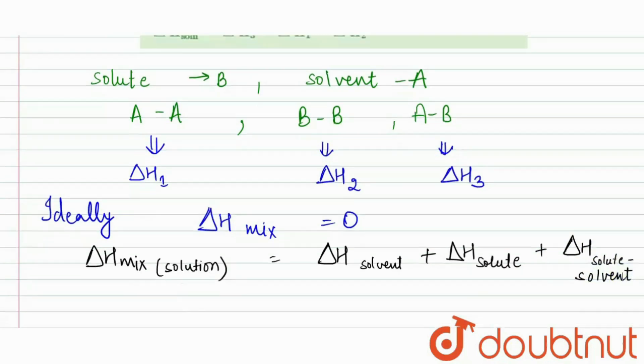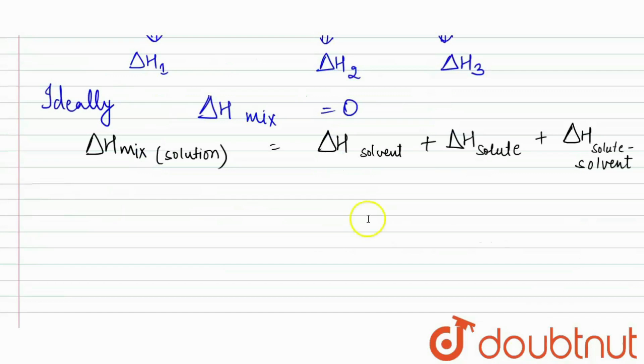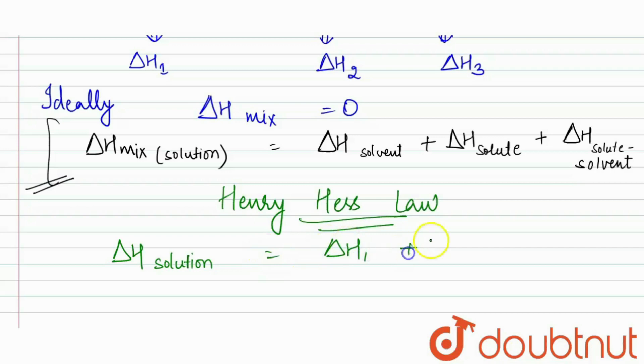Okay, so this is the condition for the ideal solution, or it is also termed as the Henry Hess law. So here it will be delta H solution equals delta H1 plus delta H2 plus delta H3 for the ideal solution.